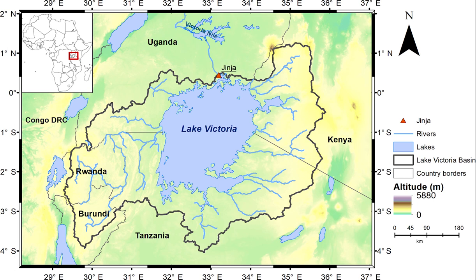Lake Victoria also receives its water from rivers and thousands of small streams. The Kagera River is the largest river flowing into this lake, with its mouth on the western shore of the lake.